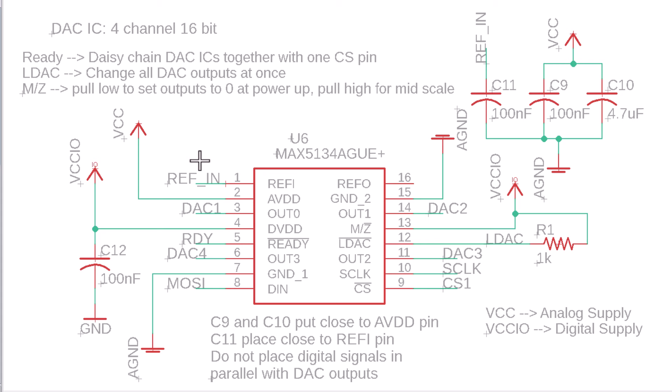The third power source is the reference. If you're not familiar with DACs or ADCs, one of the key things is that they need a reference. When a DAC outputs some digital value, it does so by comparing it to its low and high references. With a single-ended DAC, ground is your low reference, and the reference input represents the ceiling for the DAC. We want this voltage to be very accurate, so we're using a reference voltage IC that outputs 4.096 volts very accurately. That's the range of this DAC — from ground to 4.096 volts.